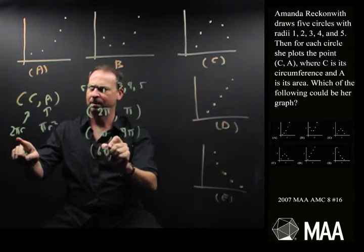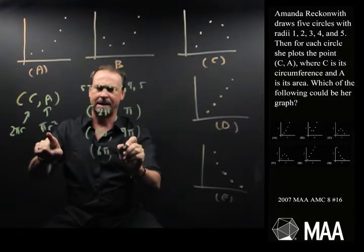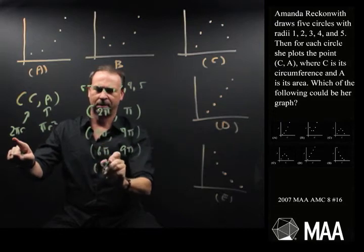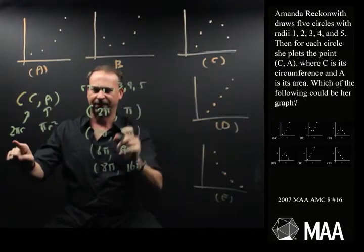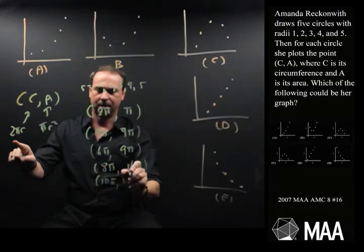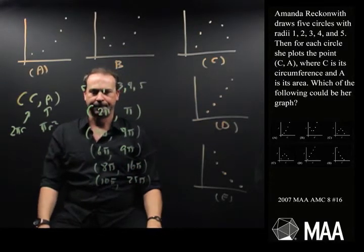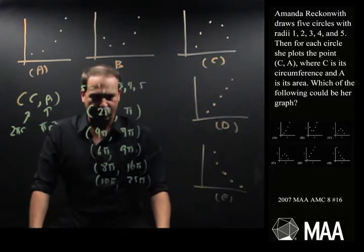6 pi, 2 times 3, times pi, and then pi r squared, 9 pi. Radius 4, 8 pi, and pi r squared, 16 pi. And radius 5, 10 pi, and what, 25 pi. All right, there's the actual five points.